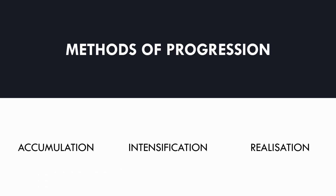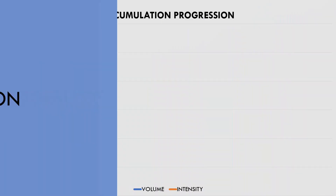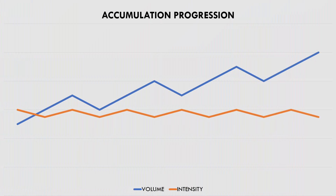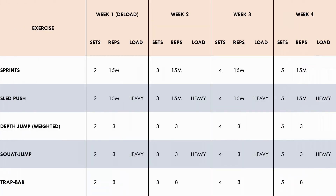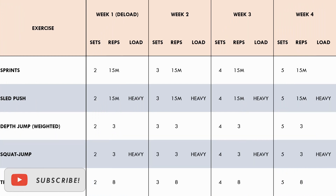An accumulation progression model refers to an increase in volume week-to-week with a maintenance of intensity. This progression is best for promoting structural adaptations and increasing work capacity, and is best used further from when an athlete needs to peak since it uses lower intensities and the athlete will carry higher fatigue levels. In our example mesocycle for the basketball athlete, we selected the most general exercises, with the first week having fewer sets as the deload week, then sets increasing each week while load and reps remain the same.